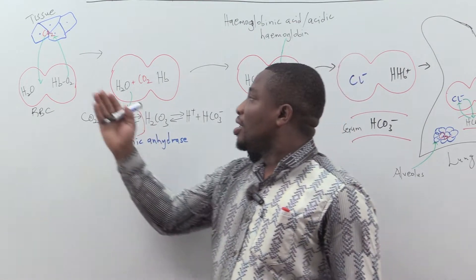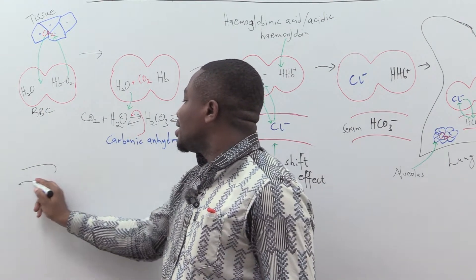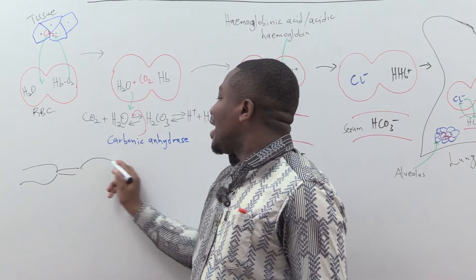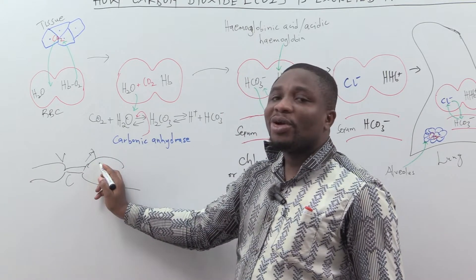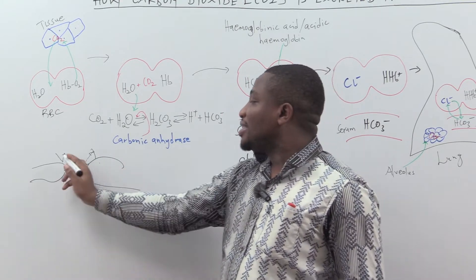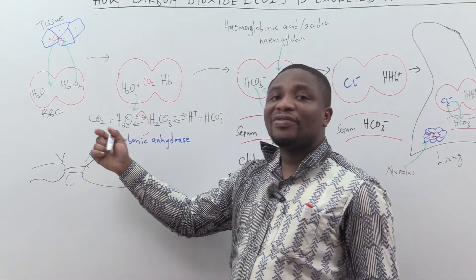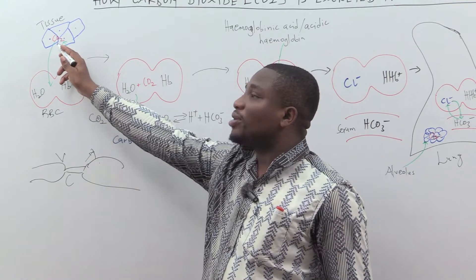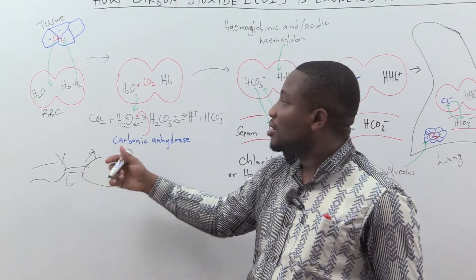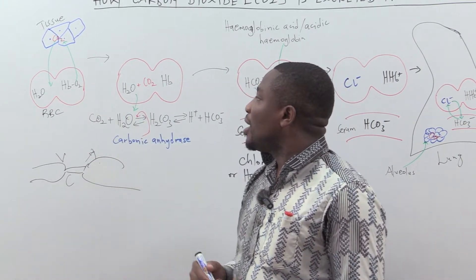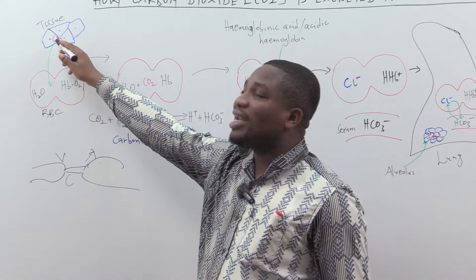With carbon dioxide being produced, capillaries run to the cell. Capillaries have two ends: the arteriolar end and the venular end. The venular end is where carbon dioxide diffuses in, while the arteriolar end carries oxygen. So at the level of the cell, you have oxygen being exchanged for carbon dioxide.